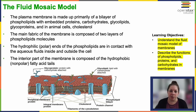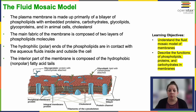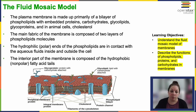The plasma membrane, like we've already talked about, is primarily made up of a bilayer of phospholipids with embedded proteins, carbohydrates, glycolipids, glycoproteins, and in an animal cell, cholesterol.